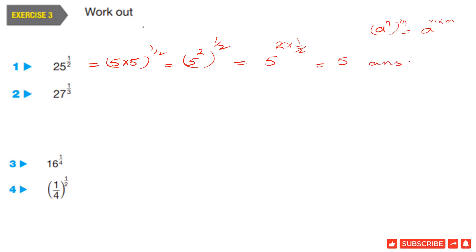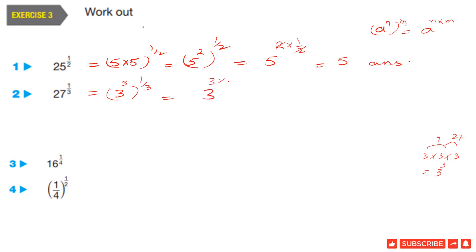Question 2: 27 power 1 by 3. We need to think of a number whose cube is equal to 27. Since 3 power 3 is 27, we write 3 power 3 whole power 1 by 3, and apply the same formula. We get 3 power 3 times 1 by 3. The 3 cancels and we get 3 as our answer for question number 2.